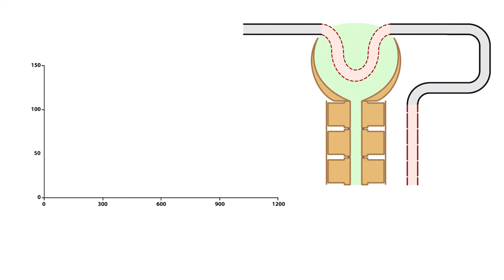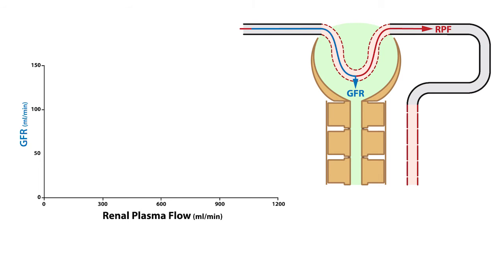Let's use this graph to explain. On the x-axis, we have the renal plasma flow in milliliters per minute, and on the y-axis, we have glomerular filtration rate, or GFR, also in milliliters per minute. The red line represents the relationship between glomerular filtration rate and renal plasma flow, and it shows that glomerular filtration rate increases as renal plasma flow increases.